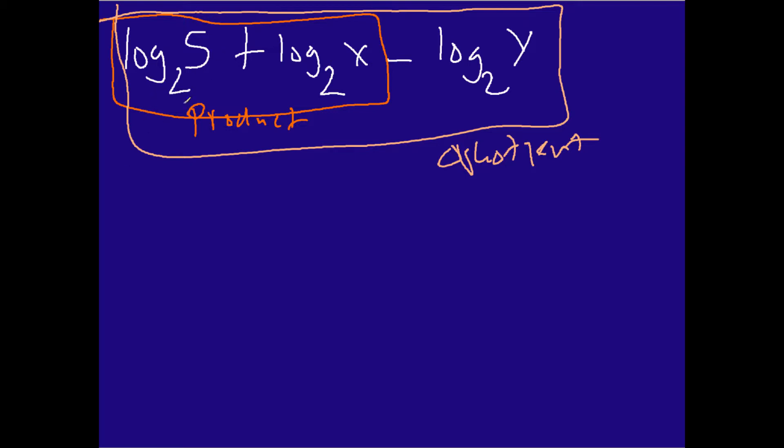I got this log base 2 with an argument of 5 plus log base 2x. Another way to write this, if you are familiar with the product property of logarithms, will be written as follows: log base 2 of 5x. Because they have the same base, you can combine them and just multiply them across like that.